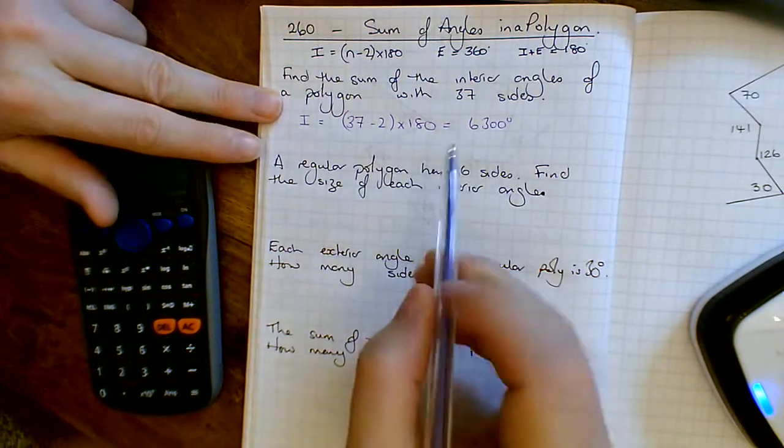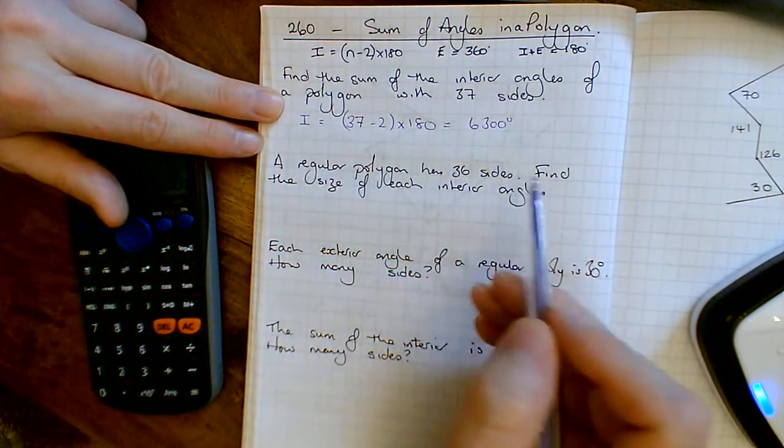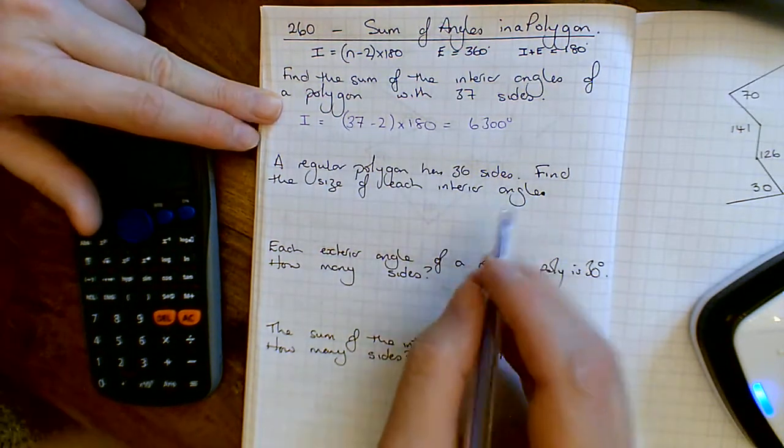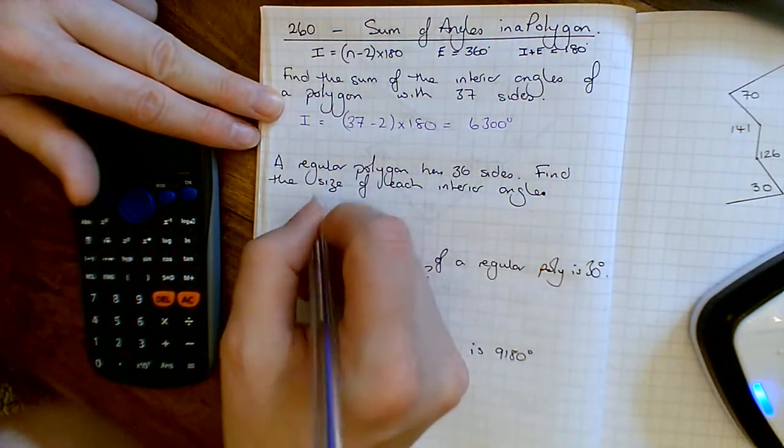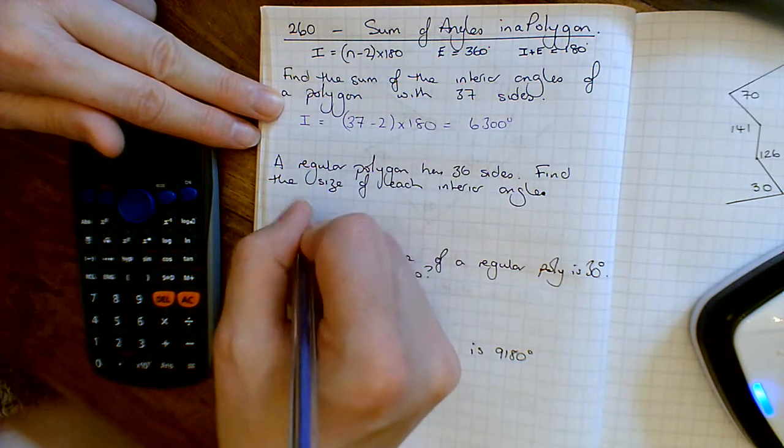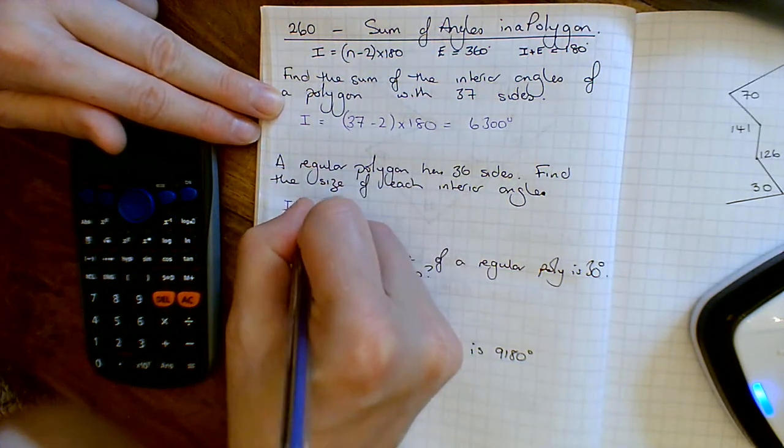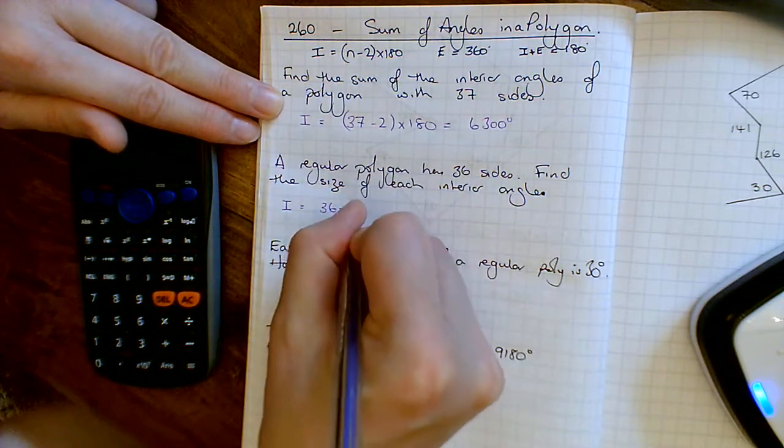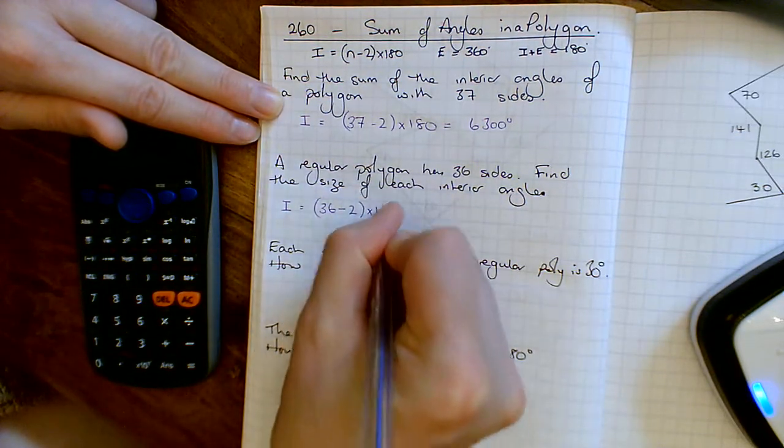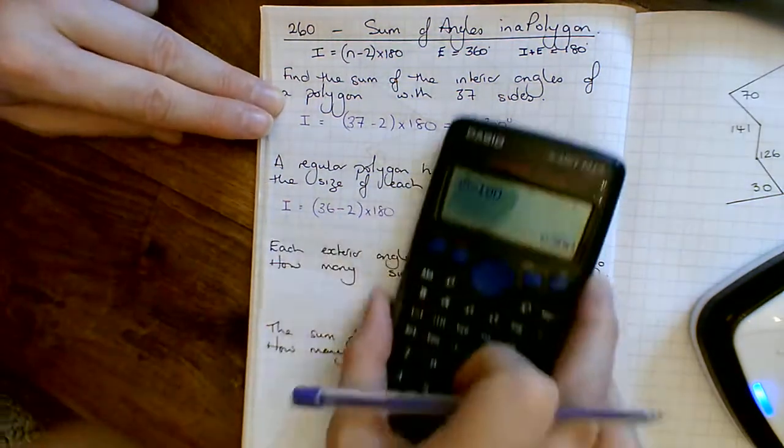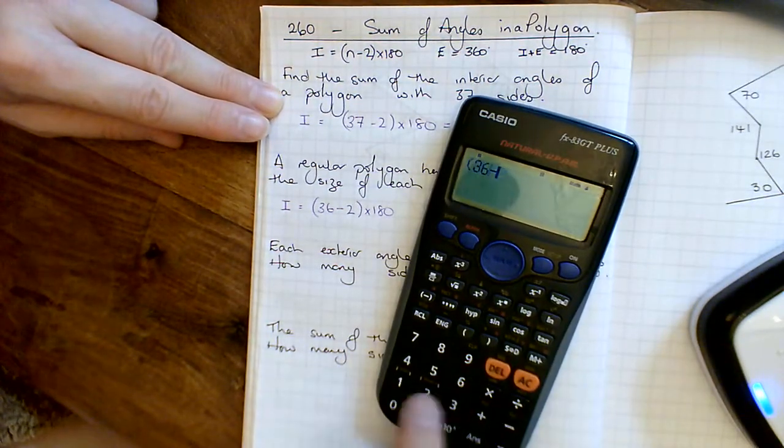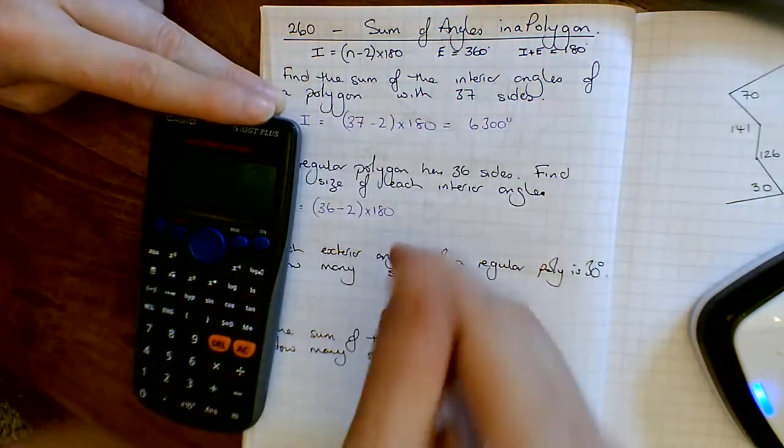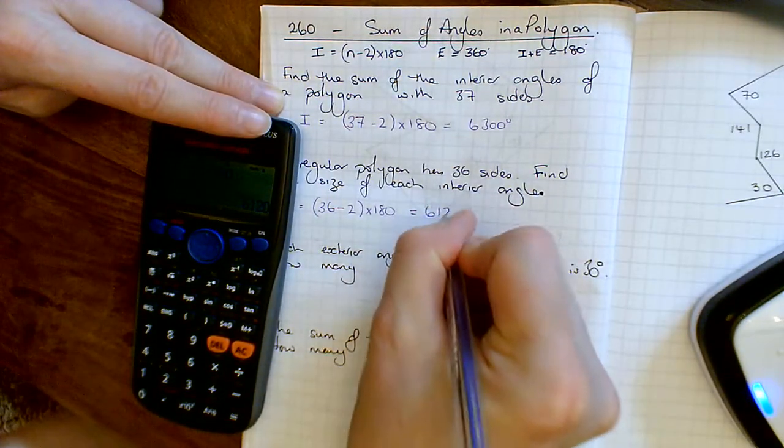Next one. Find a regular polygon with 36 sides, find the size of each interior angle. So the inside angles, what I'm doing here is 36 sides, 36 angles, take away 2 times by 180. So I get that one, so 36 take away 2 times by 180 is 6120, 6120 degrees.